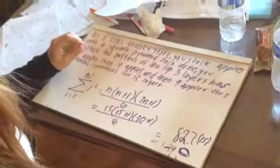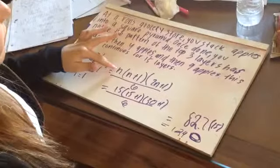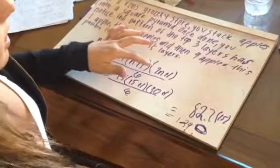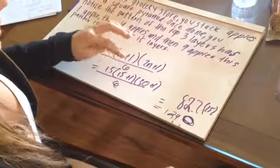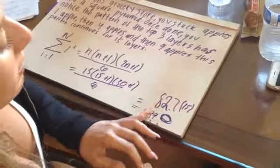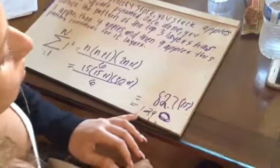You can also use this for the sum of the squared. You plug in 15, then 15 plus 1, and 30 plus 1, over 6. Then you get 82.7 times 15, and you get 1,240. So the same answer as we got in the problem before.